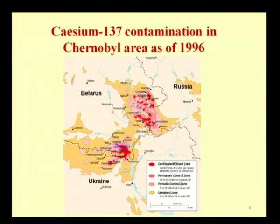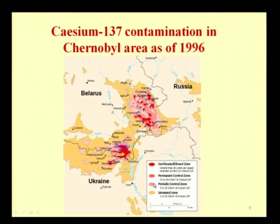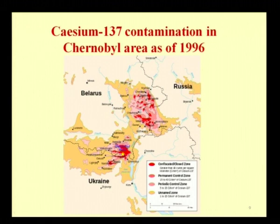This is the picture of Chernobyl. The areas marked in red are confiscated or closed zones. Those in orange are permanent control zones. Light orange indicates periodic control and yellow is an unnamed zone. So only in certain areas they are confiscated or totally closed; all other areas are open to the people. This shows the Caesium-137 contamination in Chernobyl as of 1996. You can see that only in limited portions the radioactivity is beyond the expected levels.